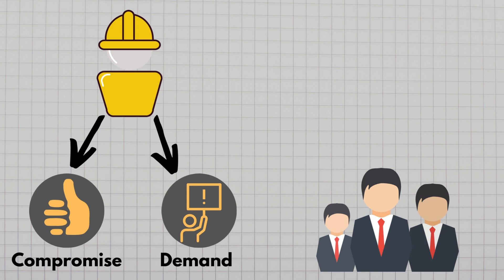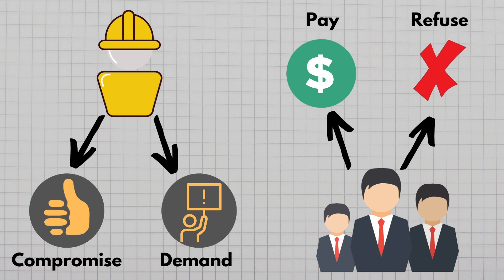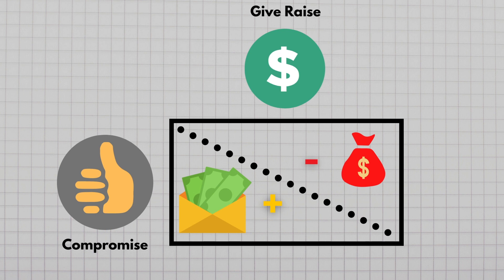In our simple game the worker has two choices: they can either compromise with the employer's decision, or they can make demands and stay steadfast. The employer also has two strategies: award the raise or refuse. If the employee is willing to compromise and the employer offers a raise, the employer suffers a cost and the employee gets a benefit — though since the employee was willing to compromise, they might not get as much as they demanded.